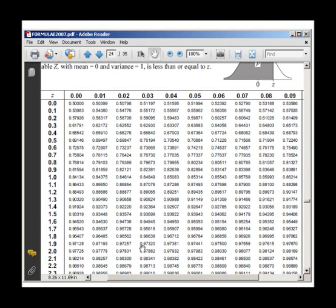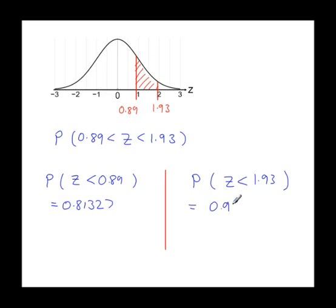That's 1.93, which gives you 0.97320. And at this stage, you just subtract the two probabilities that you've worked out.